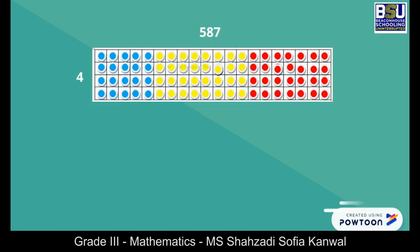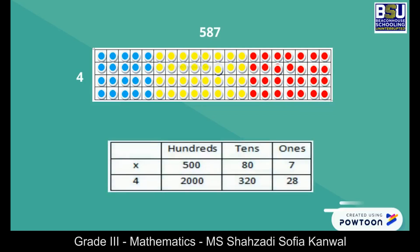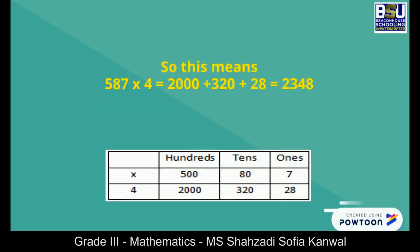Now let's multiply each of these by 4. 500 multiplied by 4 is equal to 2000. 80 multiplied by 4 is equal to 320. 7 multiplied by 4 is equal to 28. By adding all these we get the answer, which is 2348.